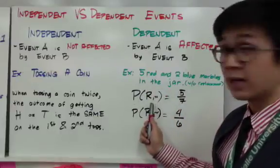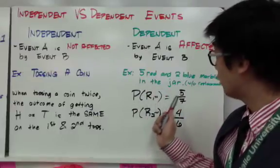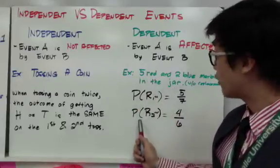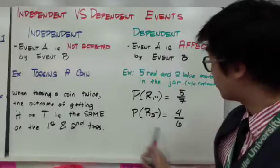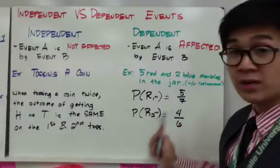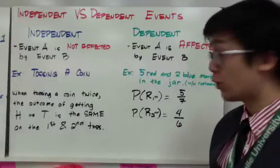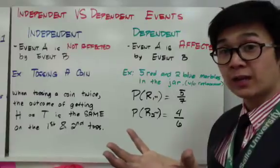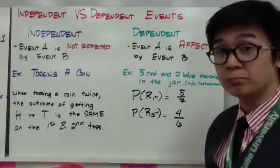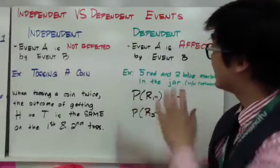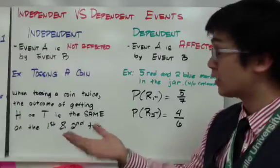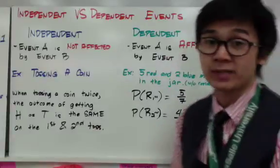The probability of getting the first red marble is five out of seven. For the second pick, the sample space changes to six, and the probability of a red marble changes to four out of six, because the first red marble picked is already removed. This is a dependent event because the first pick affects the second pick.